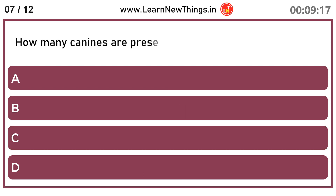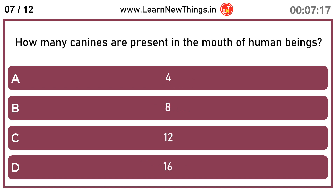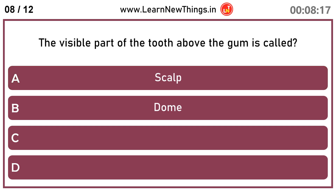How many canines are present in the mouth of human beings? The visible part of the tooth above the gum is called the crown.